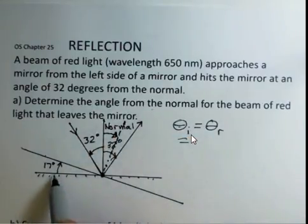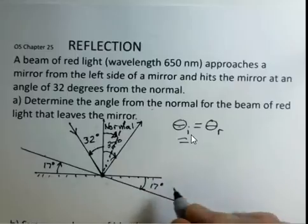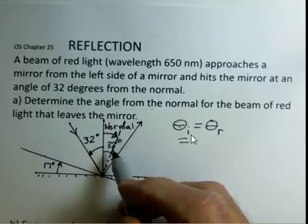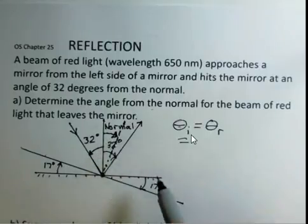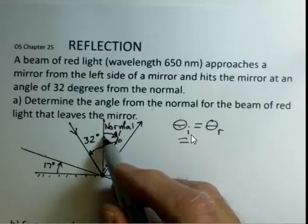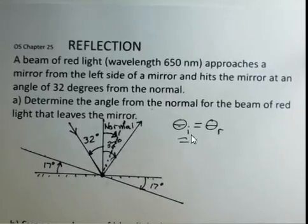If the mirror has shifted by 17 degrees the normal tracks following the mirror. It follows through the same angle so that the new normal is 17 degrees to the right of where the old normal was. How far is the incoming ray away from this new normal?